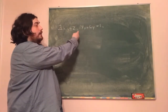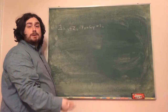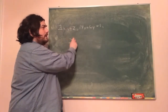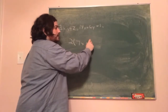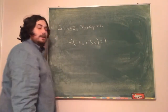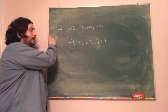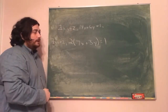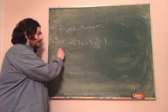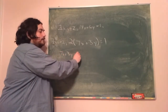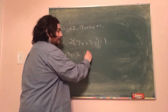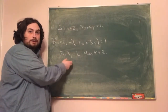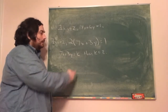Starting with the assumption that there are integers x and y such that 14x plus 6y equals 1: if I look at the left-hand side, I can factor out a 2, so I get 2 times (7x plus 3y) equals 1. There exists an x and y in Z such that 2 times (7x plus 3y) equals 1. Now, 7x plus 3y equals some value k, which is an integer, because 7 times an integer is an integer, 3 times an integer is an integer, and an integer plus an integer is again an integer.